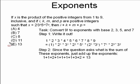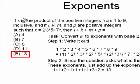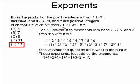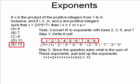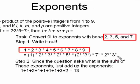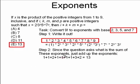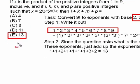It's asking what is the sum, and that's your answer — choice E, 13. The strategy is to pay attention to what they're looking for: the sum of the exponents in base 2, 3, 5, 7. Convert 9 factorial by writing out the multiplication and reducing each factor into its prime base components, then add up all the exponents. When you do that, your answer is choice E, 13.